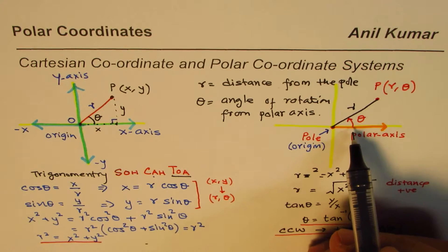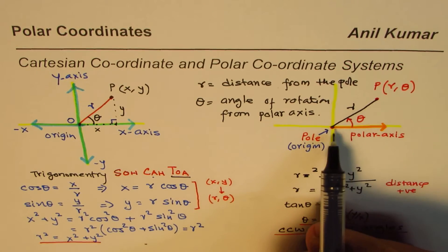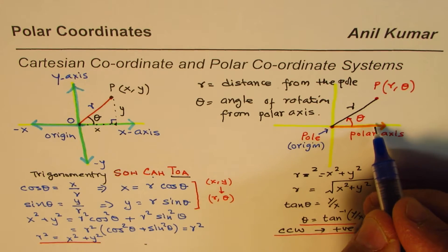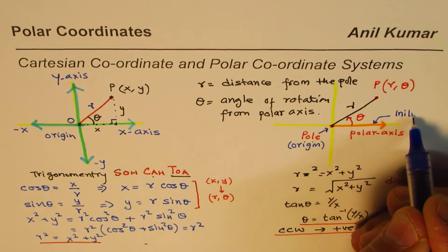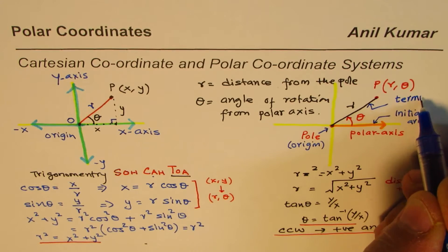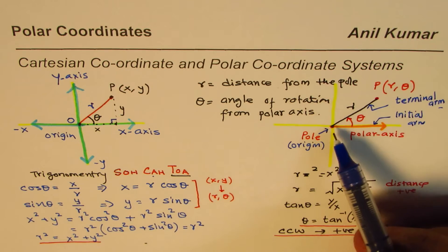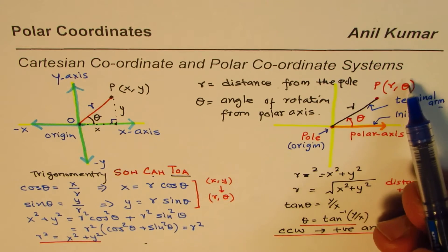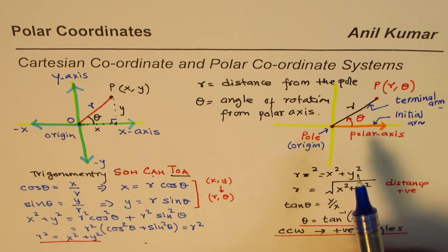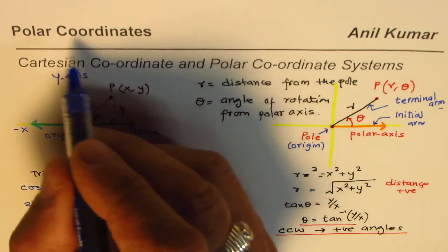If the angle is positive, you go counterclockwise; if negative, you go clockwise. We have just one axis here with a rotation along it. This axis is called the initial arm — the polar axis — and the rotated line is called the terminating arm or terminal arm. Note that (r, θ) represents a segment, not a ray, whereas the polar axis is a ray.